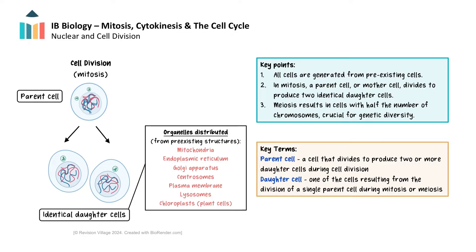To ensure that both daughter cells have the energy needed to survive and function, mitochondria must replicate and be evenly distributed during the cell cycle. Mitochondria possess their own genetic material and replicate independently of nuclear DNA. This replication typically occurs throughout the cell cycle, but is particularly important during S phase. It involves mitochondrial DNA duplication and mitochondrial division through binary fission. The cell's cytoskeleton ensures that mitochondria are evenly distributed between the daughter cells.